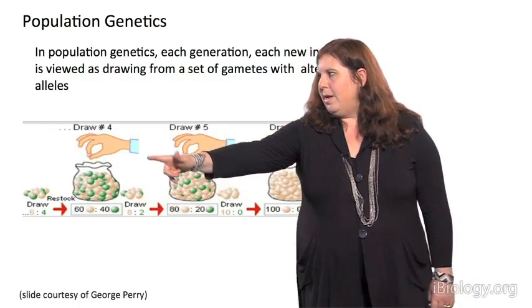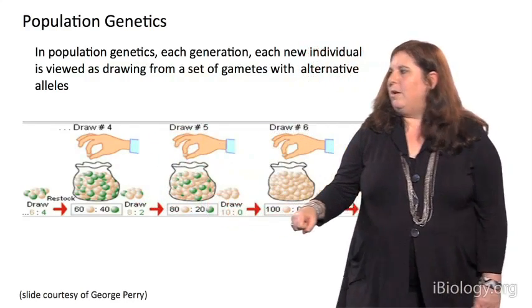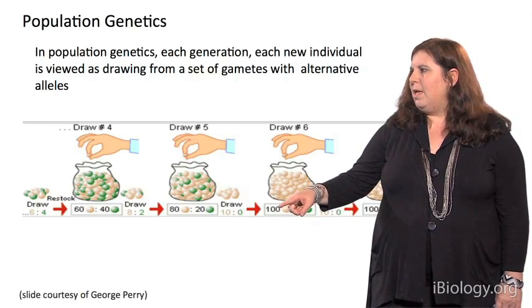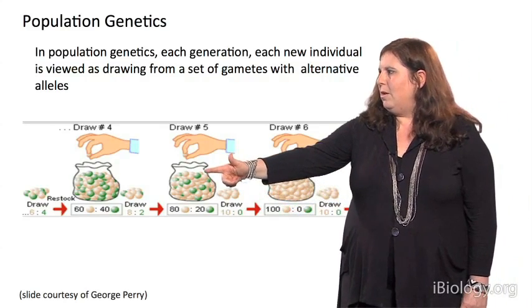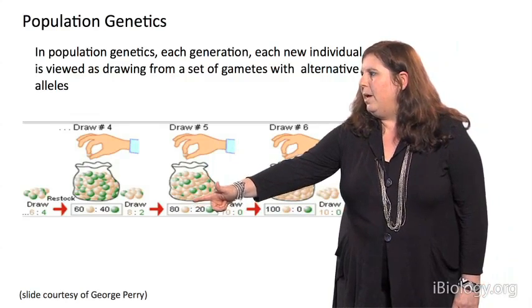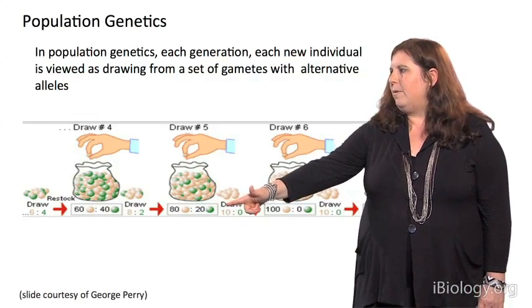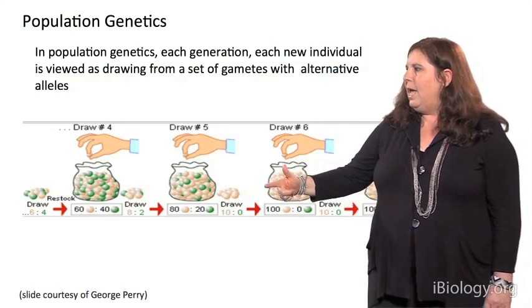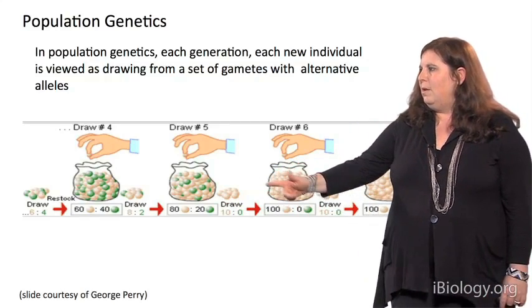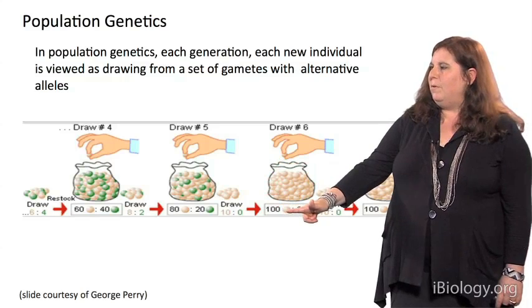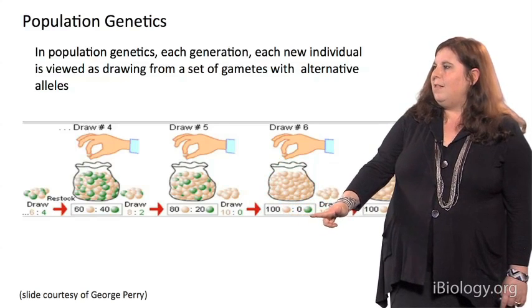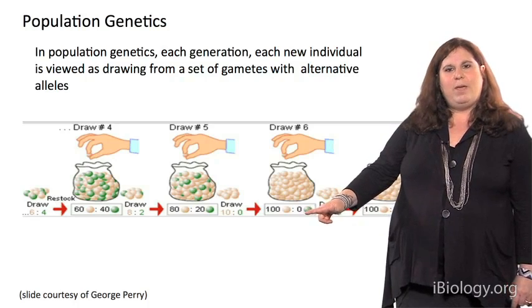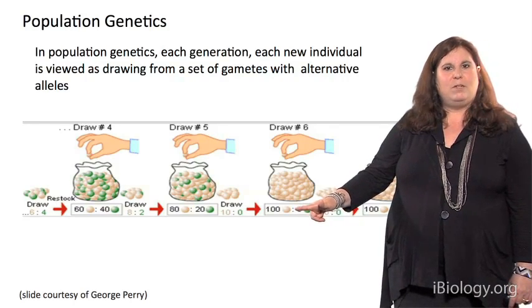Let's say that we're going to reach into this bag, and we're going to randomly draw out another 100 of these marbles. And now, in the next generation, we have 80 of the white and we have 20 of the green. We're going to reach back in. We're going to grab another set of 100. And now, in the next generation, we have 100 of the white alleles and zero of the green. And this is a demonstration of how we get changes in allele frequency over time.